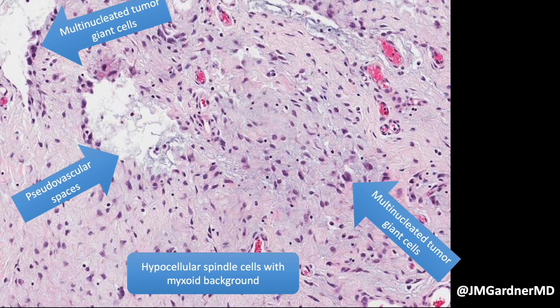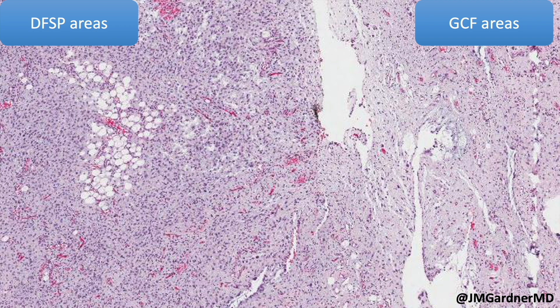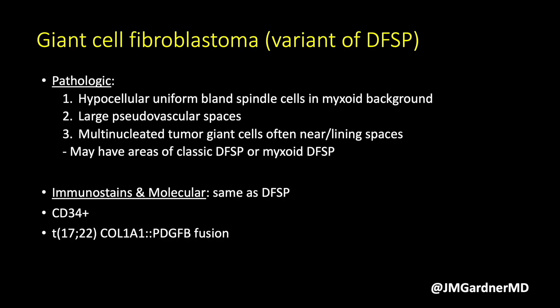You can see areas of giant cell fibroblastoma that transform into conventional DFSP, but oftentimes there's some myxoid change in the background. I feel like when a DFSP has giant cell fibroblastoma-like areas, it tends to also have a lot of myxoid change. So myxoid DFSPs have a lot of overlap with these, and if I see any cells that look like that, I start thinking about myxoid DFSP.